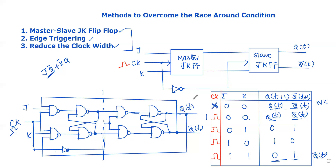The race-around condition occurs in JK flip-flops when J equals K equals 1. The three methods to overcome the race-around condition are: reducing the clock pulse width, edge triggering, and using the Master-Slave JK flip-flop.